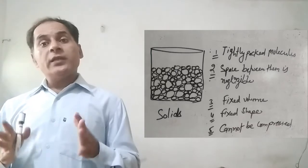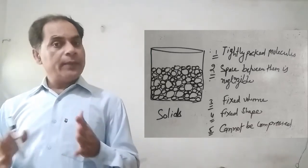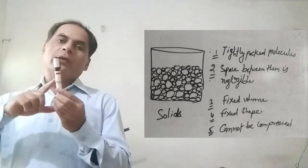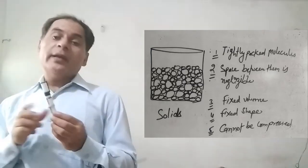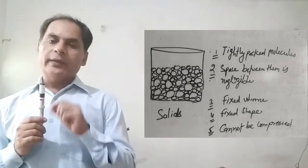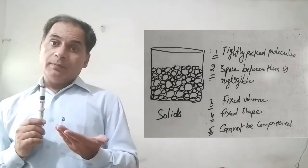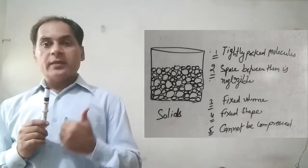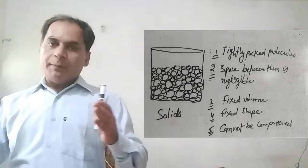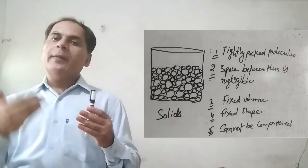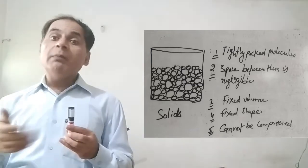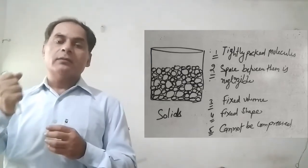In the solid state, the volume is always fixed. We cannot compress a solid. The intermolecular space between the molecules is negligible — there is no space between the molecules of a solid. The force of attraction is maximum. So solids occupy very less space compared to liquid or gas. We can compress liquid, we can compress gas, but we cannot compress a solid, because the space is already occupied by the molecules and there is no gap between them. Compressibility is minimum.